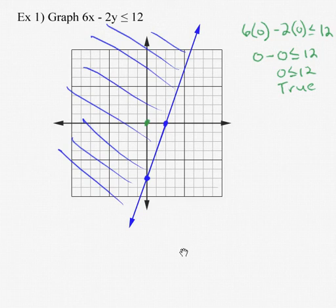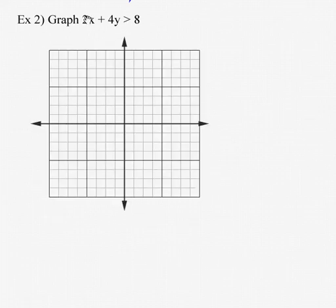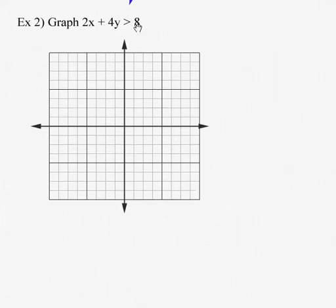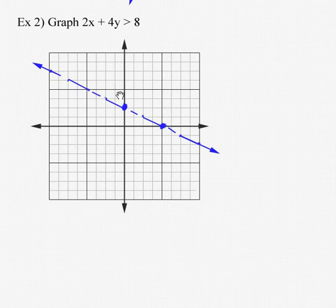We want to include all the points on the graph itself. Now let's look at another one. In this particular case, 2x plus 4y is greater than 8. There is no equal sign. Put in 0 for x to find out where it crosses the y-axis: 4y equals 8, so y equals 2. Put in 0 for y to find out where it crosses the x-axis: 2x equals 8, so x equals 4. If there's no equal sign, we do not want a solid line — we want a dotted or dashed line, which represents everything up to the line but not including it.